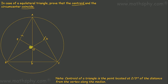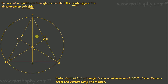Now we have the centroid, and we have to see if this centroid and the circumcenter coincide. The circumcenter means for this triangle, the center point O such that OA, OB, and OC are all equal to the radius. Let's move on to triangle ABC.